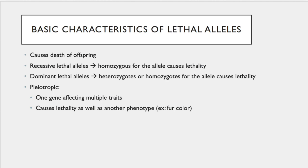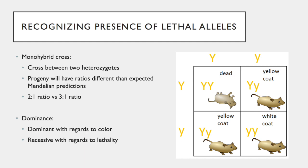Lethal alleles are also included in pleiotropic genes. Pleiotropy occurs when a single gene causes multiple phenotypes. So in this case, one gene is causing the lethal phenotype as well as some other phenotype, such as fur color. The phenotypes that a pleiotropic gene influences have independent dominance patterns from one another.